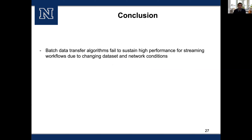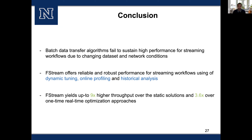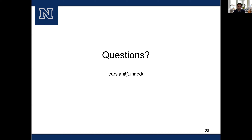In conclusion, data transfer applications fail to sustain high performance for streaming workflows due to changing network conditions. They perform well when conditions match the initial setup, but fail when things change because they cannot adapt to changing environmental conditions. FC Stream offers reliable and robust performance for streaming workflows using dynamic tuning, online profiling, and historical analysis, yielding up to 9 times higher throughput over static solutions and 3.6 times over one-time optimization approaches. If you have any questions, please feel free to email me. Thank you.